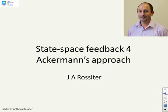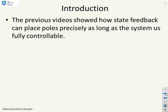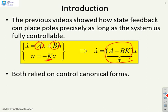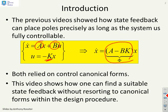The fourth video in this series on states-based feedback looks at Ackermann's approach. Previous videos showed how state feedback can be used to place poles precisely as long as the system is fully controllable — that is, as long as A and B are fully controllable, you can find a state feedback k to place the poles of A minus Bk wherever you want. We've shown a transformation method and a method using control canonical forms, but both of those methods implicitly relied on a control canonical form at some point. This video shows an alternative approach to state feedback which does not resort to canonical forms at any time within the design procedure.